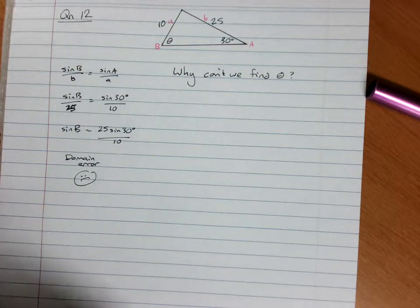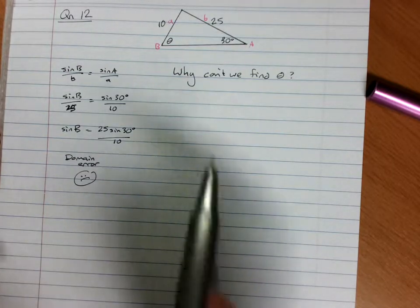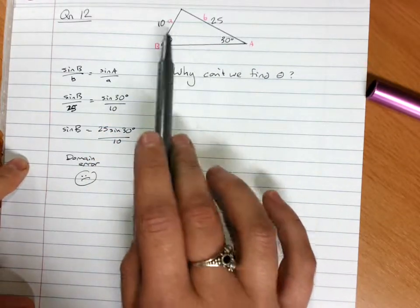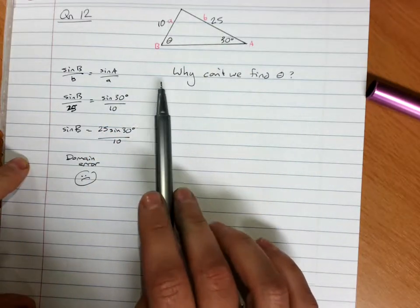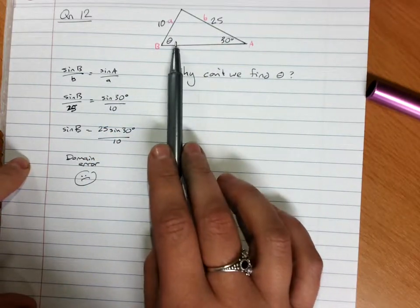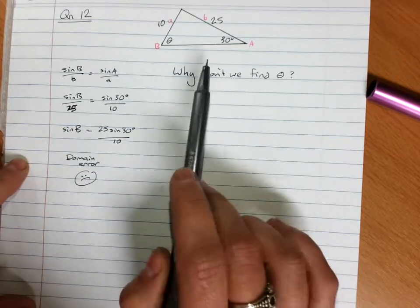A few of you have had trouble with question 12, where they give you this triangle. I've just labeled it and asked, can we find the angle here at B, and if so, why not?